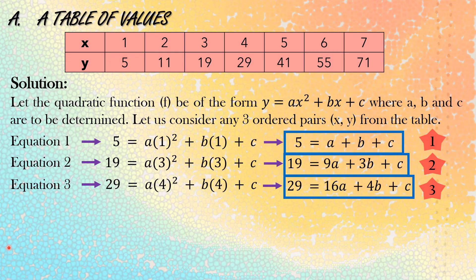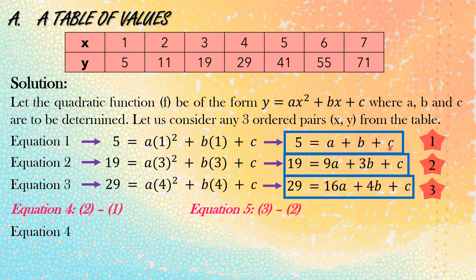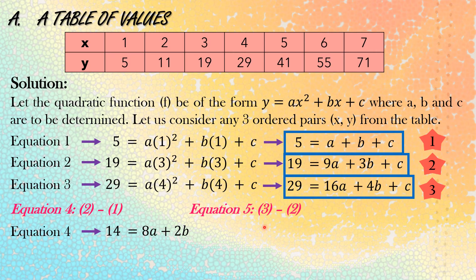We still need to find equations 4 and 5 to solve for the quadratic function. To find equation 4, we subtract equation 1 from equation 2. For equation 5, we subtract equation 2 from equation 3. For equation 4: subtracting 19 minus 5, 9a minus a, 3b minus b, and c minus c — since c minus c equals 0, the variable c is eliminated. So we get 14 equals 8a plus 2b.